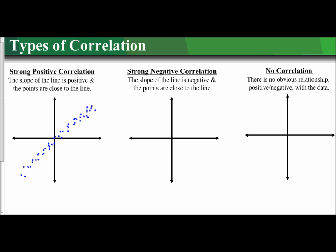So the data itself resembles a line and has a positive slope. We say then it has a strong positive correlation.